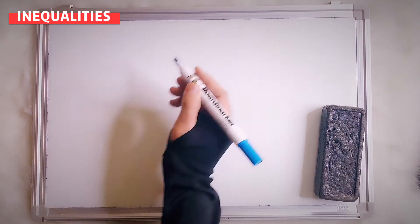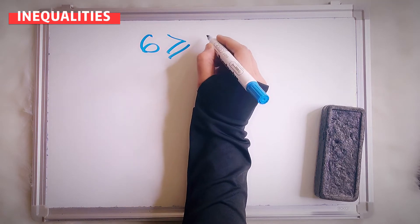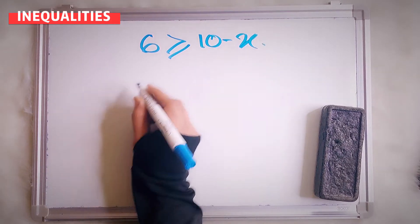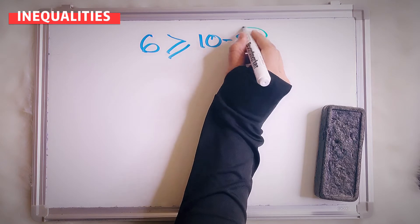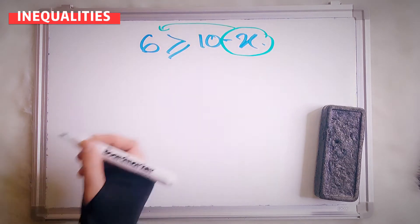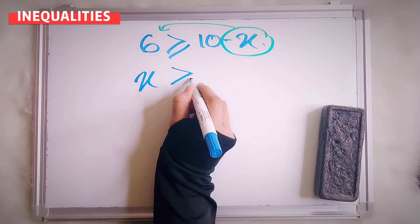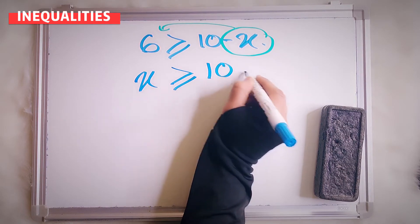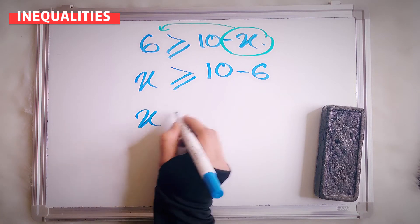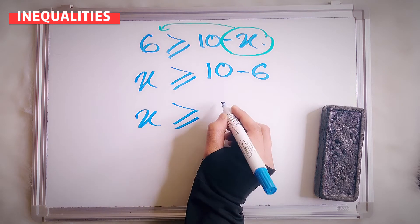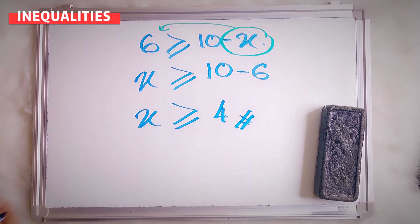Okay, next one. The sign will be: more than or equal to 10 minus x. So now I want to transfer this — I want to make it positive for the x. The sign still maintains. 10 minus 6 — this is positive, so you bring to this side, it becomes negative. So x is more than or equal to 10 minus 6, which is 4.